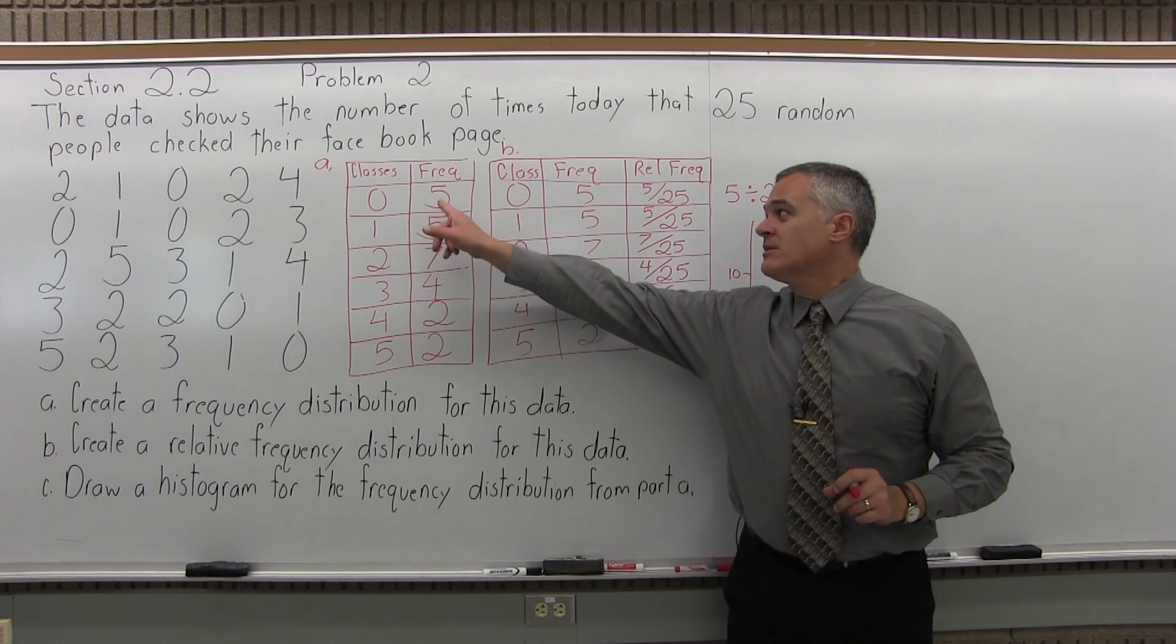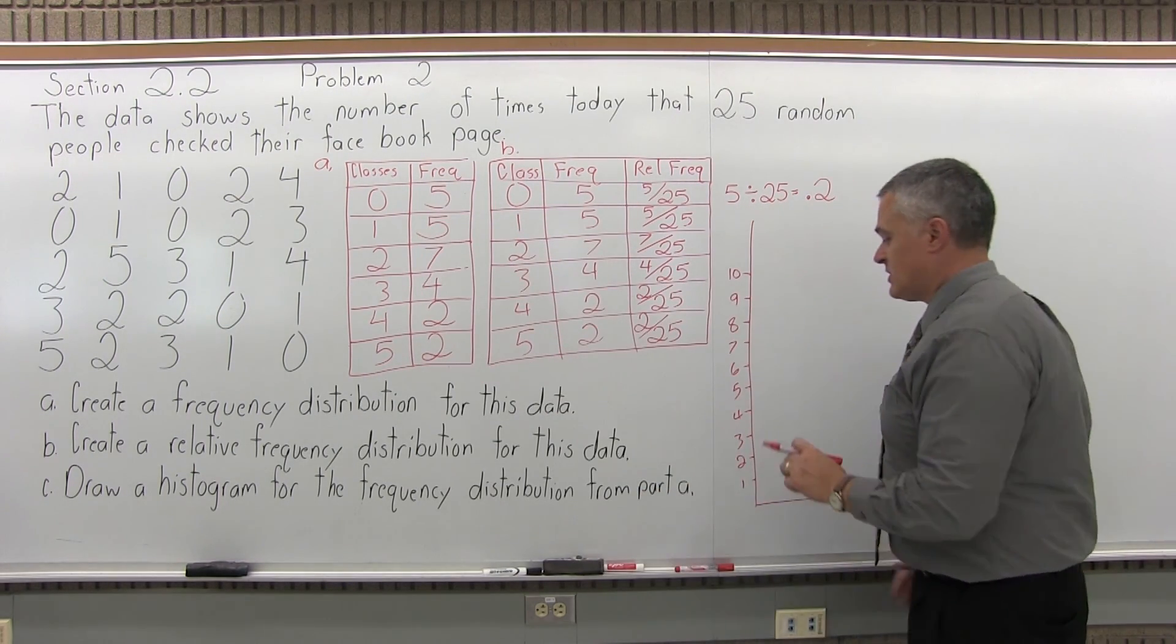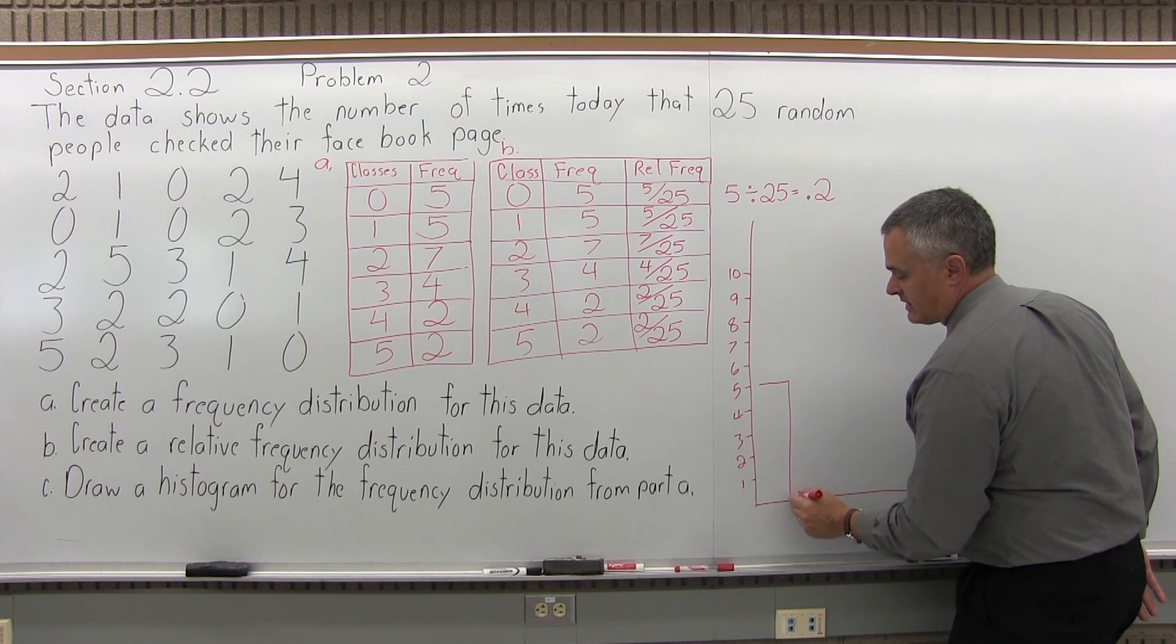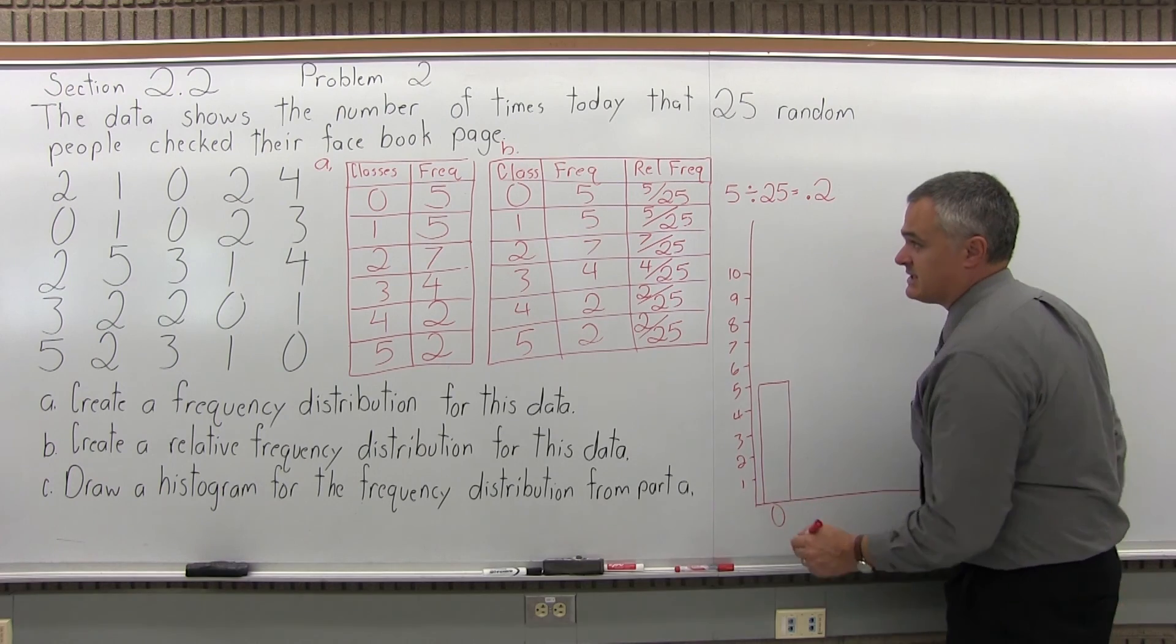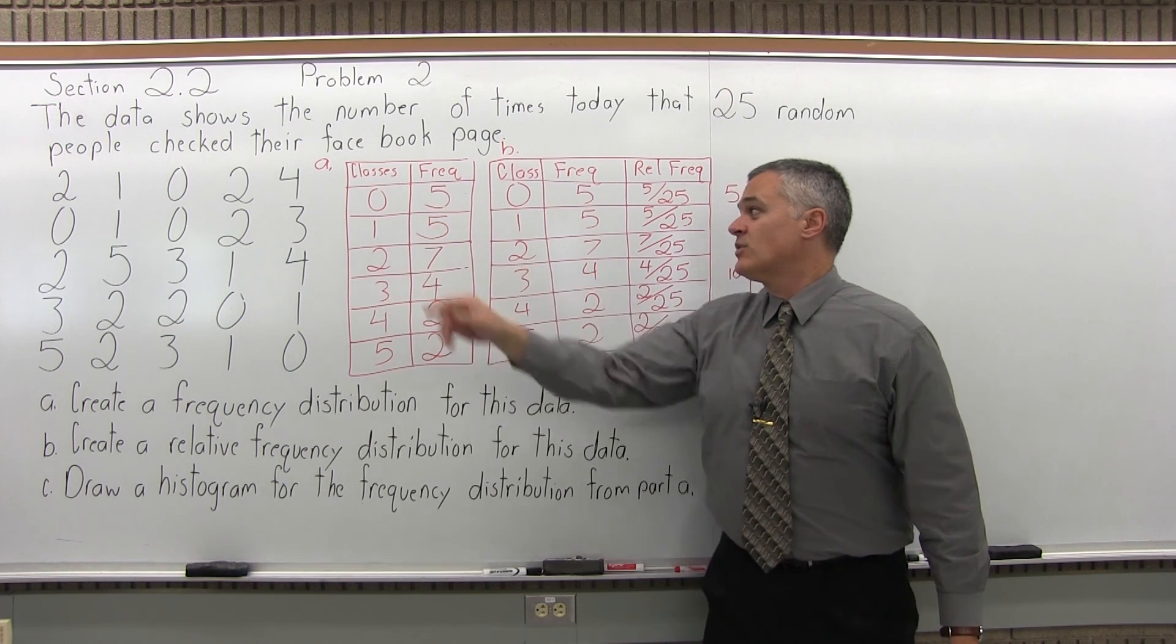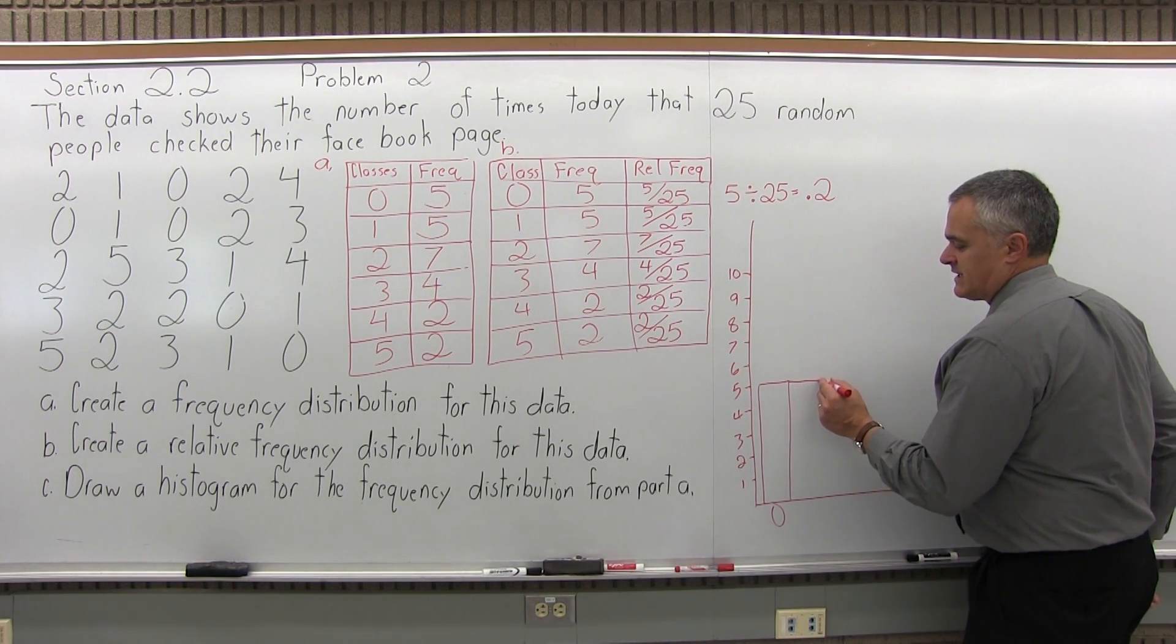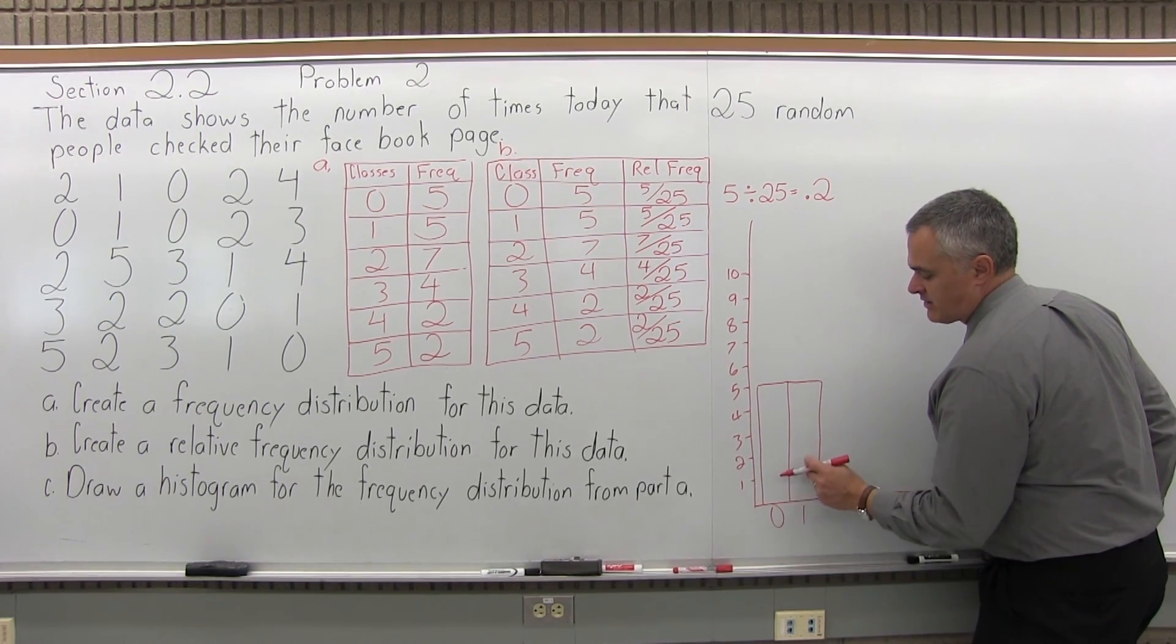So the first bar has a frequency of five, so it will have a height of five. So on my number scale I have a five, the bar will go to that height. Again, it's vertical, it has to be vertical for histogram. And it gets labeled with a zero because that's what class it represents. The class of zero goes up to height of five. Same for the class of one, same height, five. Same height. Again, the bars touch. And the next bar is labeled one.